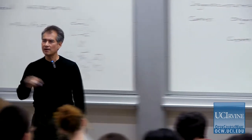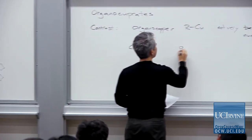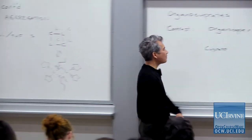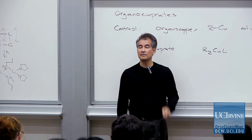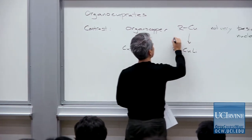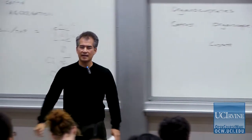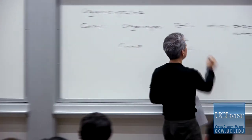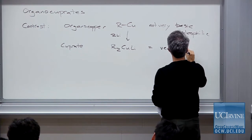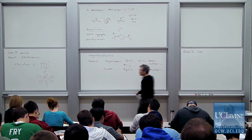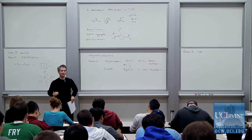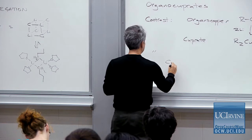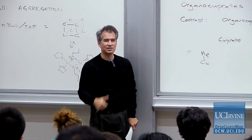In contrast, a cuprate is very interesting and very reactive. An organocuprate typically has two alkyl groups on copper. You make it the same way you make the organocopper reagent — take copper bromide and alkylithium, mix them together — but if you add a second equivalent of alkylithium to your organocopper reagent, now you have two alkyl groups on copper. These are very nucleophilic and not very basic.